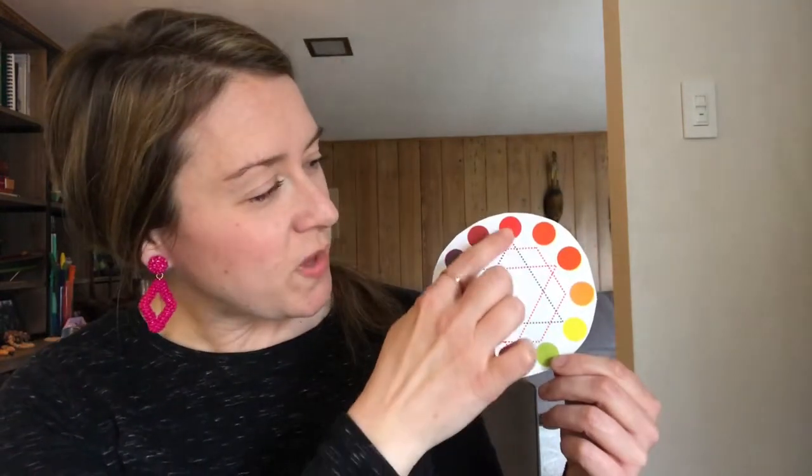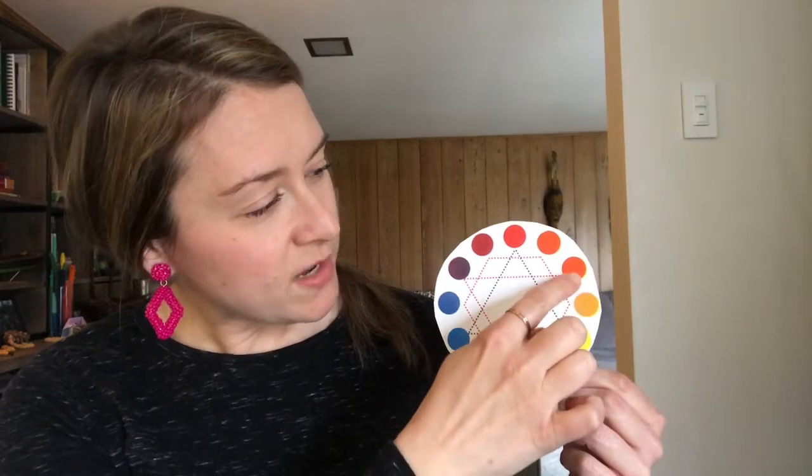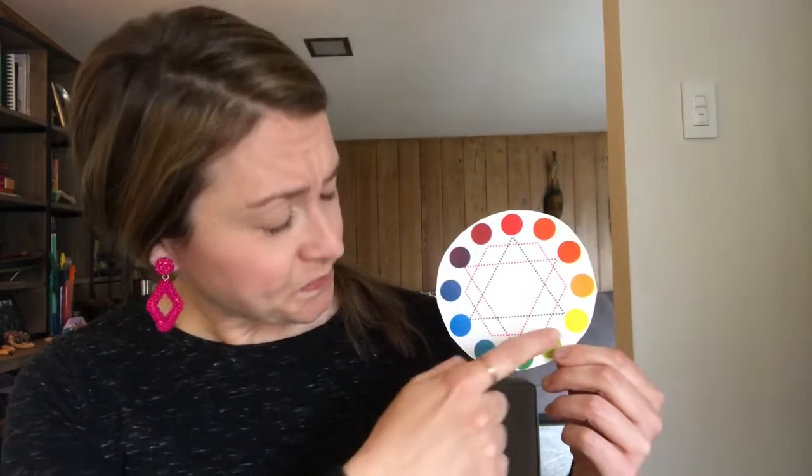So we can use our color wheel to figure out what color makes the other colors. So we remember red and yellow make orange, the secondary color. We remember that yellow and blue mix together to make green,